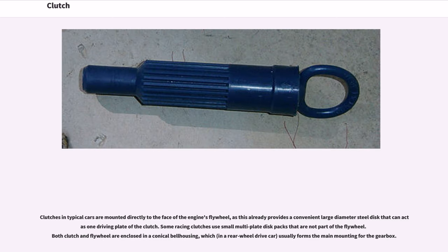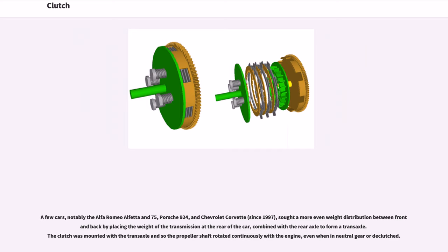Clutches in typical cars are mounted directly to the face of the engine's flywheel, which provides a convenient large-diameter steel disc acting as one driving plate of the clutch. Some racing clutches use small multi-plate disc packs not part of the flywheel. Both clutch and flywheel are enclosed in a conical bellhousing, which in a rear-wheel drive car usually forms the main mounting for the gearbox. A few cars — notably the Alfa Romeo Alfetta, Porsche 924, and Chevrolet Corvette since 1997 — achieved more even weight distribution by placing the transmission at the rear, combined with the rear axle to form a transaxle. The clutch was mounted with the transaxle, so the propeller shaft rotated continuously with the engine even when in neutral.